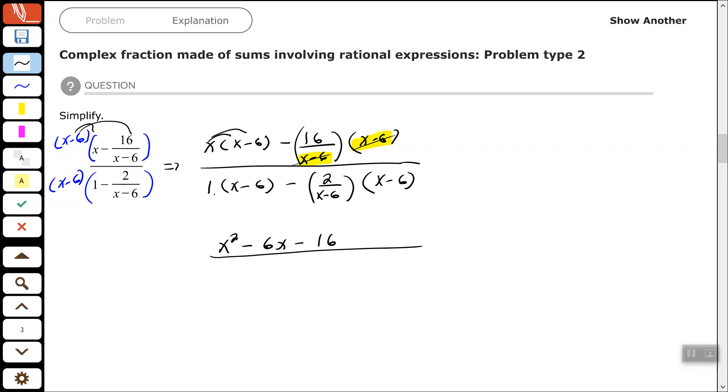Alright, now in our denominator here, we have 1 times x minus 6, which is just x minus 6. And then again, the x minus 6s will cancel. So I have minus 2.